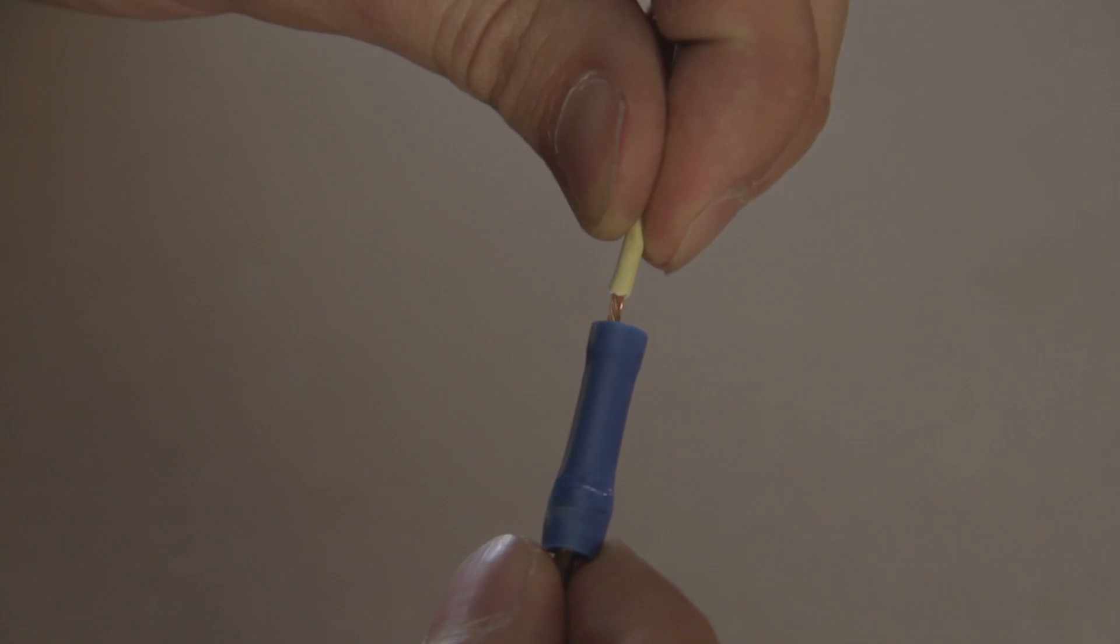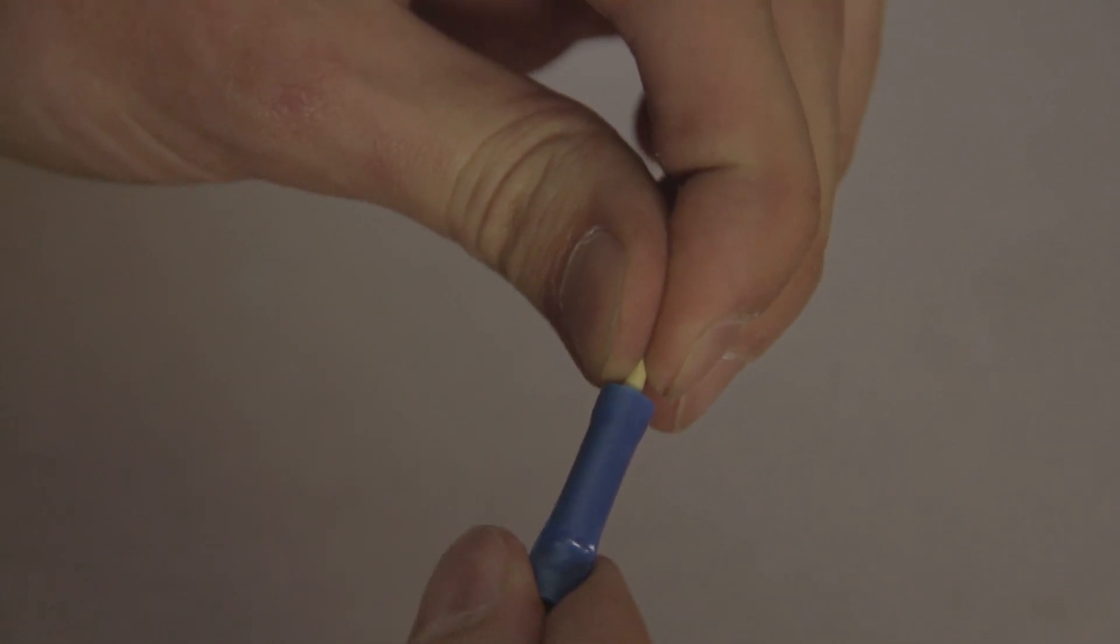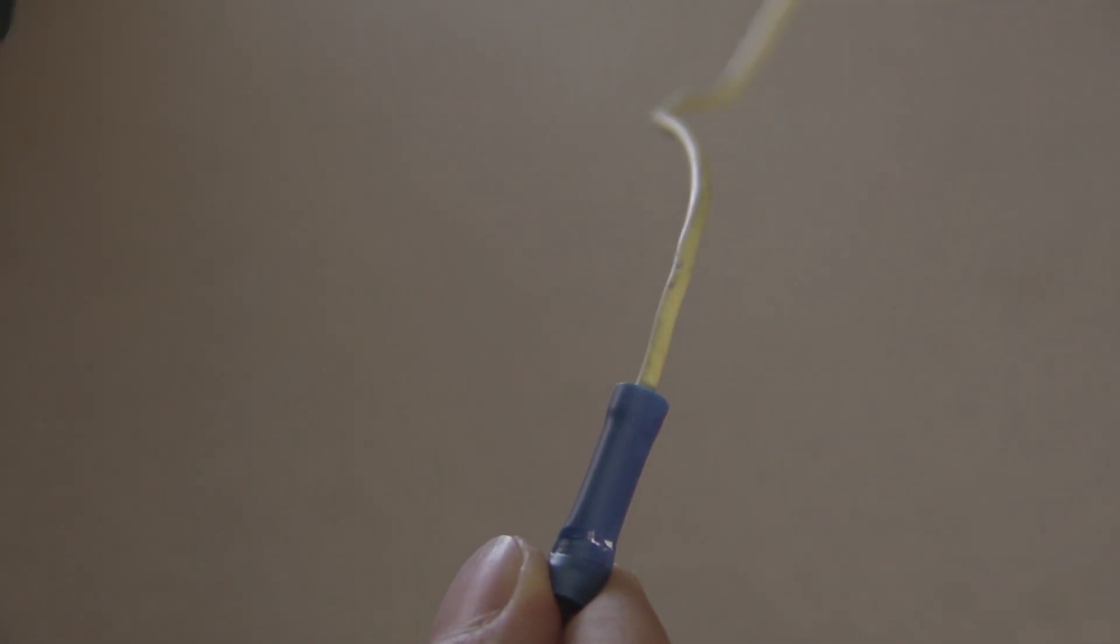The other safe connection option is the humble crimp connector. It's available in a variety of styles and sizes. Being simple and easy to use, they are popular, however they don't always offer the longevity of soldering.